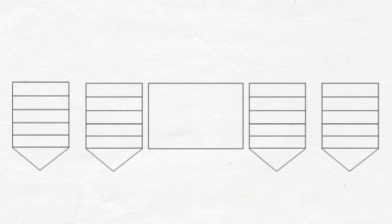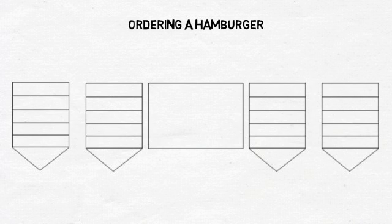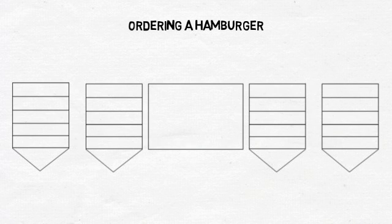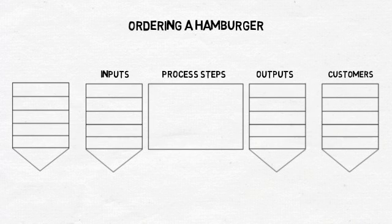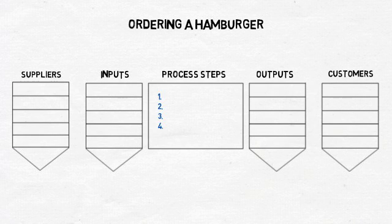Let's create a SIPOC diagram for the process of ordering a hamburger. Keep in mind that when creating the SIPOC, you should complete the diagram in the order of O, C, P, I, S — not from left to right, as you might naturally read a diagram. Furthermore, you should add the top 4 to 7 items under each section.